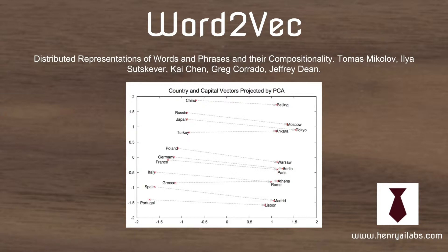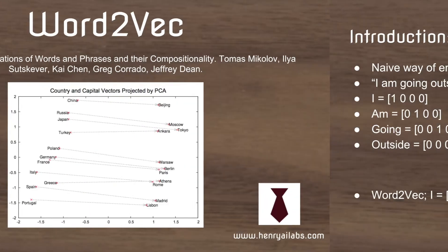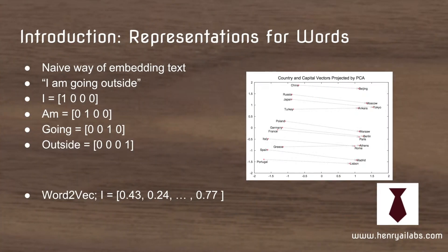Word2Vec is one of the most popular ideas in deep learning. It's this fundamental idea of predicting the context of a word and using this to create a semantic space that represents words. To motivate the idea of Word2Vec, you have to understand how you would represent words naively for a supervised learning machine learning model.